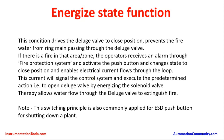The push button is in open position during normal conditions, but whenever there is a fire, the operator pushes the push button. There could also be some automated actions through the fire protection system. During that condition, current flows through the push button and through the solenoid valve. This current signals the control system and executes the predetermined action — that is, to open the D-Ledge valve by energizing the solenoid valve. Water then flows through the D-Ledge valve to extinguish the fire.